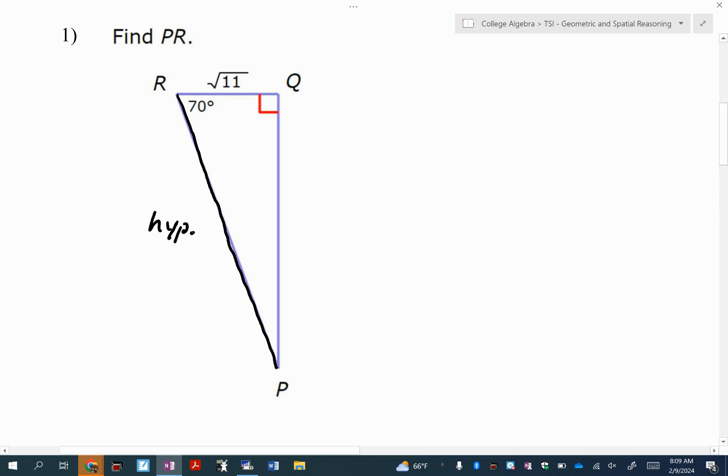Now normally what I would say is I would recommend using Pythagorean theorem, but you can only use Pythagorean theorem if you know two out of three of the side lengths. Do I know two out of three of these side lengths? I do not. I only know this side length. So instead what we're going to do is we're going to use a trig ratio to find that side length for the hypotenuse.